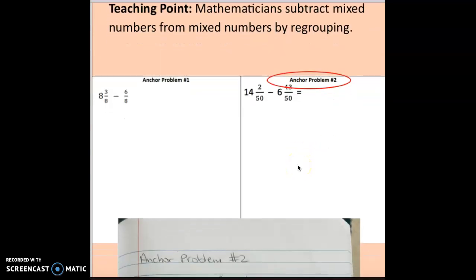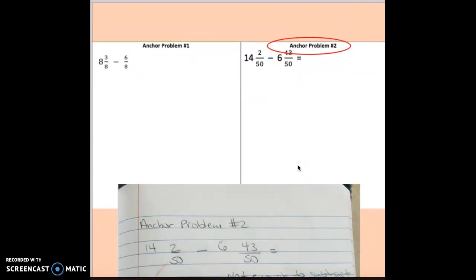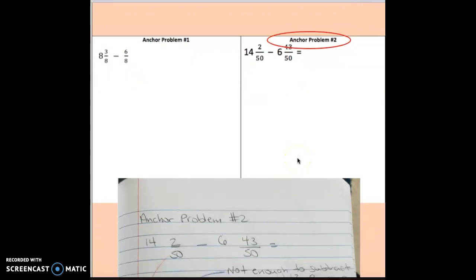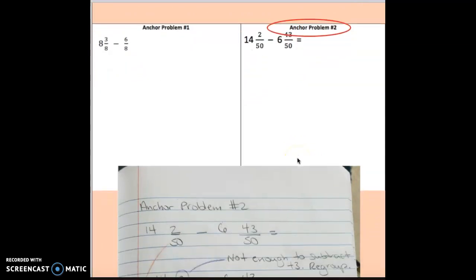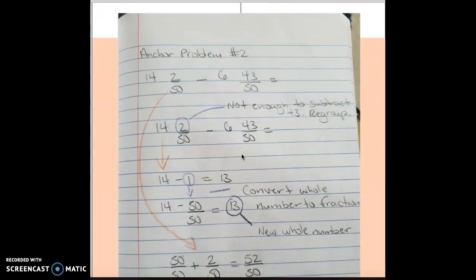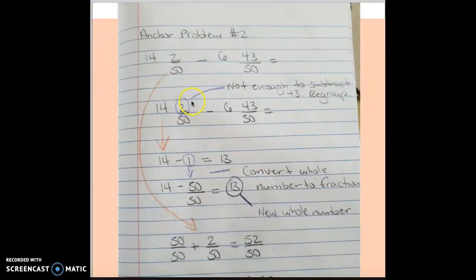Anchor problem number two looks scary but don't be afraid. The numbers are larger but it really doesn't make much difference because you guys are so great at math. Anchor problem number two says 14 and 2 fiftieths minus 6 and 43 fiftieths. I'm looking at my minuend and the numerator is not enough to subtract 43 in the subtrahend, so I have to regroup.